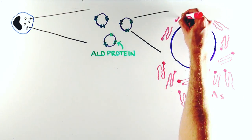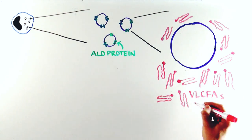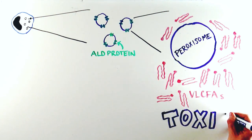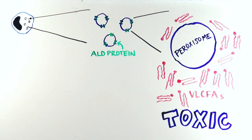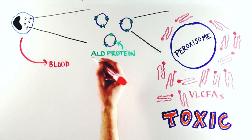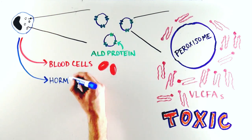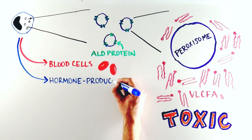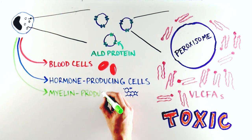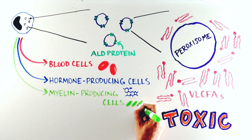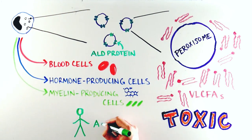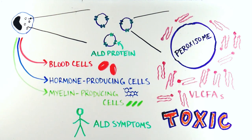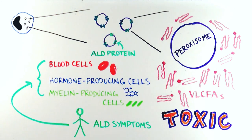The very large quantities of VLCFAs can be toxic to certain cells, including cells that produce blood cells, cells that produce hormones, and cells that produce myelin in the nervous system, which is required for neurons to function. Therefore, patients with ALD develop very severe symptoms associated with the malfunction of these cells.